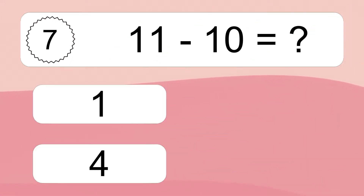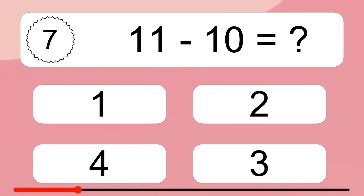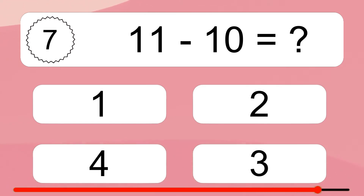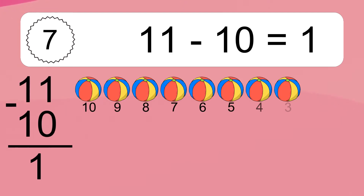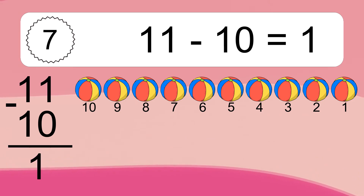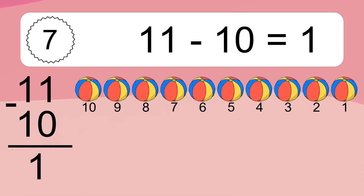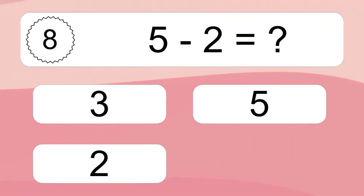11 minus 10 equals what? 11 minus 10 equals 1. Let's count it: 10, 9, 8, 7, 6, 5, 4, 3, 2, 1.